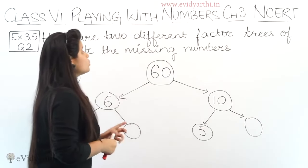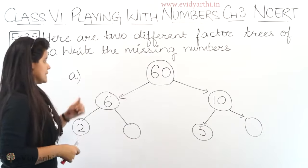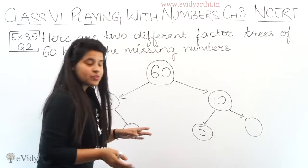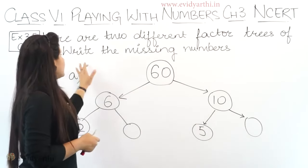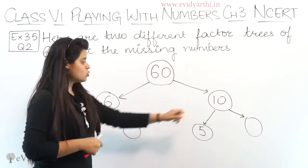In this question, here are two different factor trees of 60. This is part A, and in part B there is also another factor tree. Write the missing numbers. Now here we will write the missing numbers.